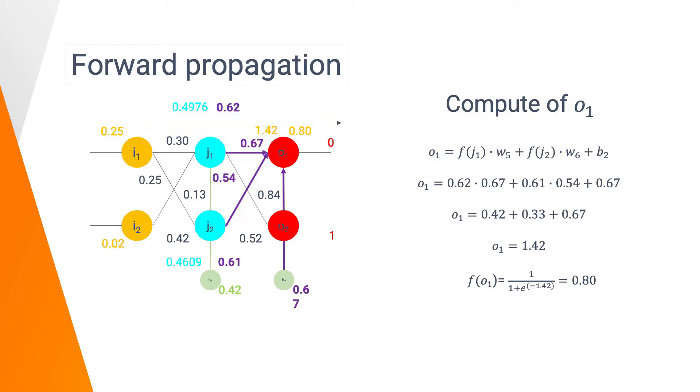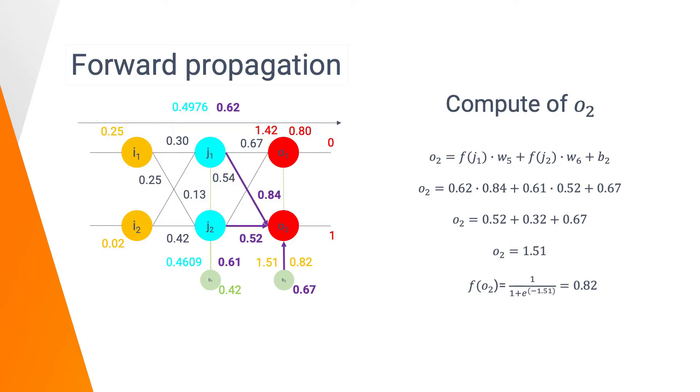For O1, we got 1.42 as input and 0.80 as output. Following again the same process for O2, we got 1.51 and 0.82. We can also report all those values on our schema. Do not hesitate to pause this part of the video and try to retrieve the same numbers. You can also put new weights values at the initialization and change the value of input and output and feed your own neural network.